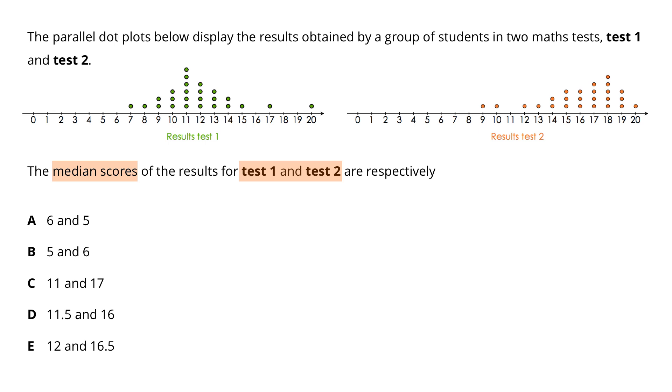When we count the dots for the results for test 1, we notice that there are 25 scores and the same number for the results for test 2. So there are 25 scores in each test.